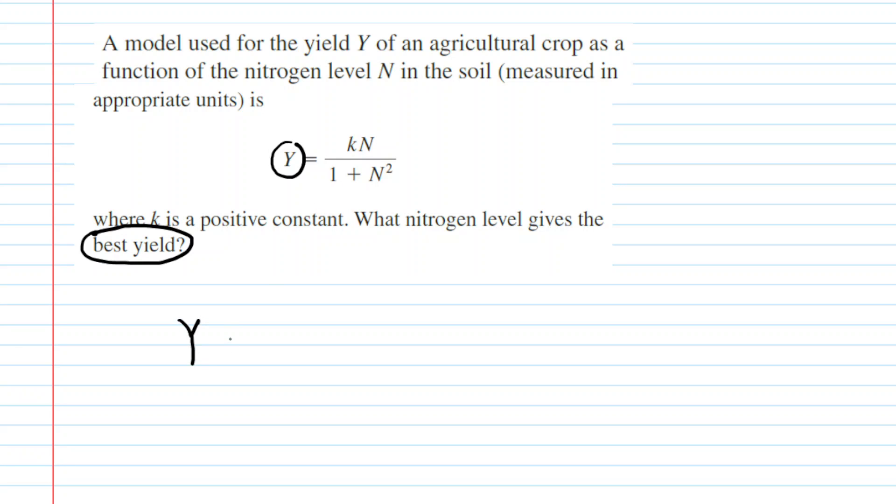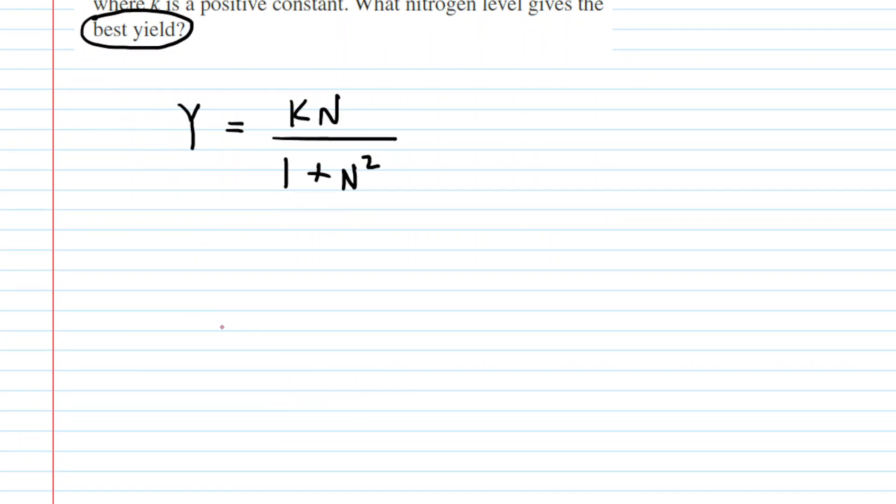Let's write down our function again. We want to start thinking about what method we would use to compute the derivative of this function. We all notice here that this is a quotient. We have a function in the numerator divided by a function in the denominator. Because it's a quotient, we have to use the quotient rule. One way of doing the quotient rule is to let f equal the function in the numerator, kN, and let g equal the function in the denominator, 1 plus N squared.